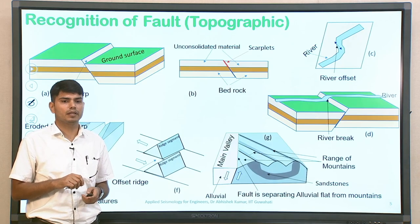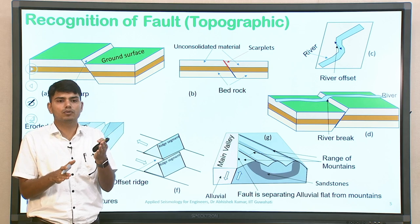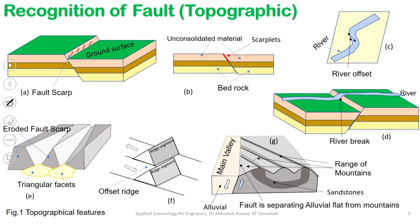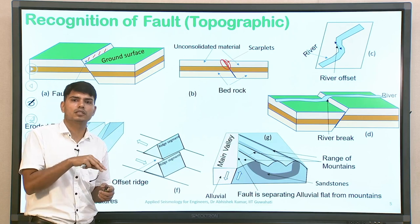Fault scarps show that during a particular earthquake, one side of the ground moved up while the other side moved down, leaving a visible trace. Unconsolidated material and scarplets can be seen depositing, with some movement to the upper layers. In another example, there was a river, but because of movement along the fault, you can see a sudden change in the drainage or orientation of the river — this is also an indication of the presence of a fault undergoing some kind of deformation, causing the course of the river to undergo significant change.